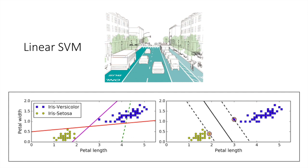The model whose decision boundary is represented as a dashed line is so bad that it does not even separate the classes properly. The other two models work perfectly on this training dataset but their decision boundaries come so close to the instances that the model will probably not perform as well on new instances.